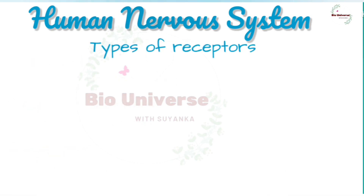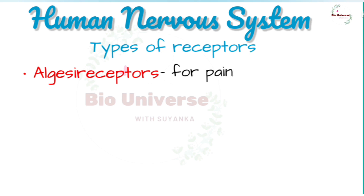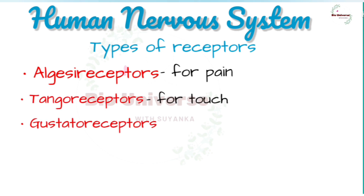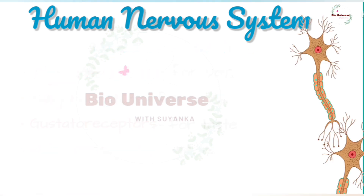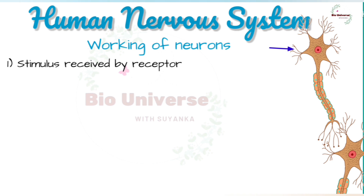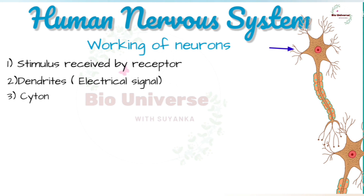There are different types of receptors, such as algesia receptors for pain, tango receptors for touch, gustatory receptors for taste, olfactory receptors for smell, and so on. The stimulus received by a receptor is passed on in the form of electrical signals through the dendrites of a neuron to the cytone. The cytone transmits only strong impulses; weak impulses are not further transmitted.